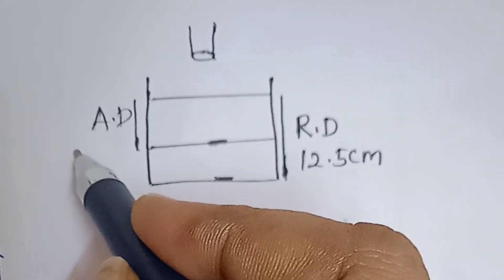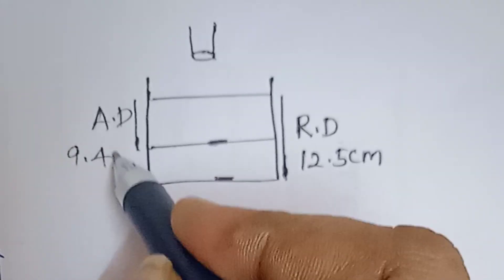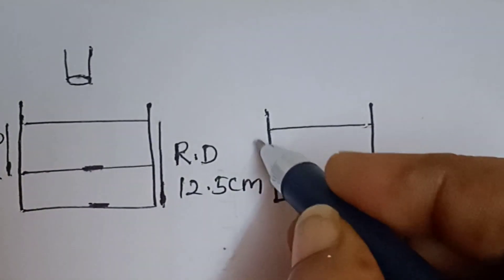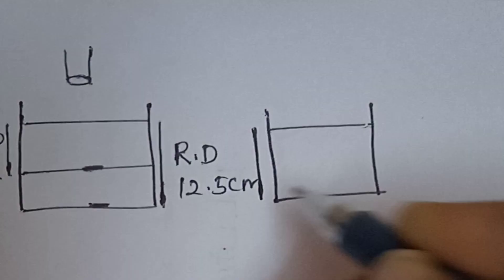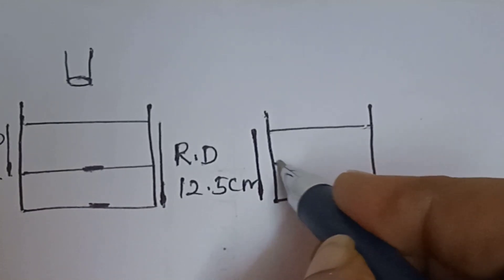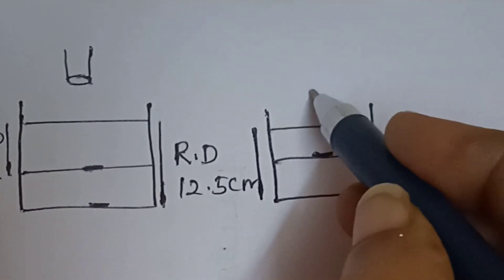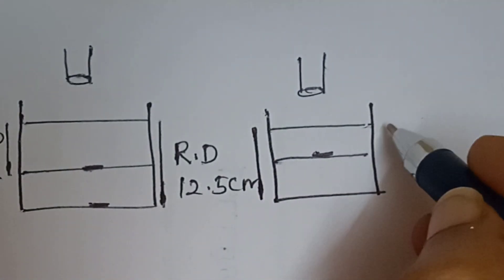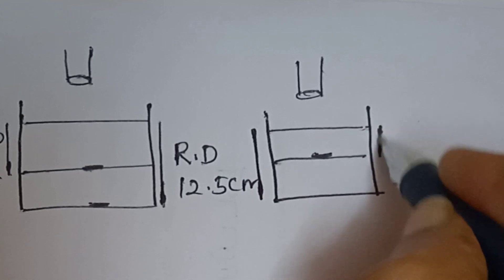This will give us the refractive index of water. Now, when we replace water with a liquid of refractive index 1.63, the microscope will need to move to focus on the needle. We need to calculate the new apparent depth to find the shift.